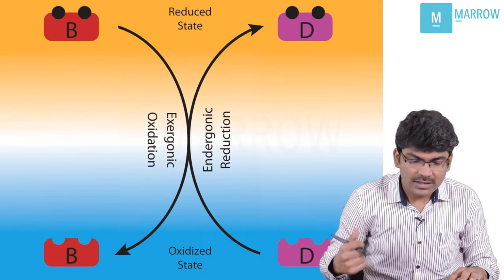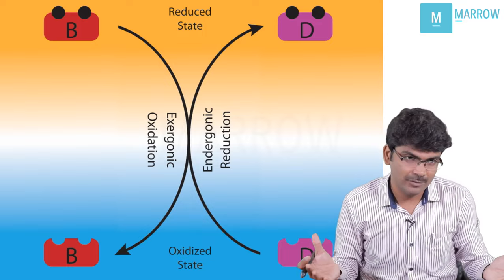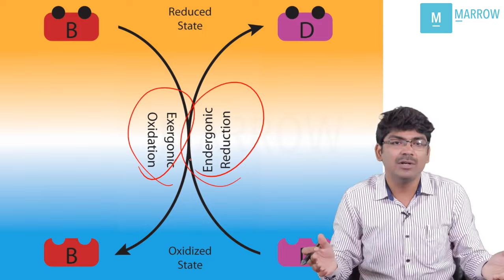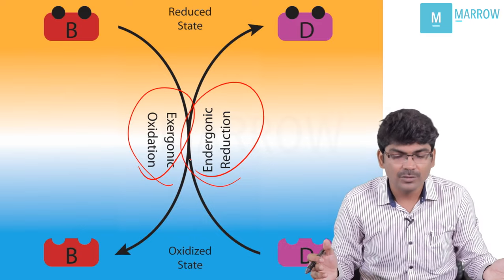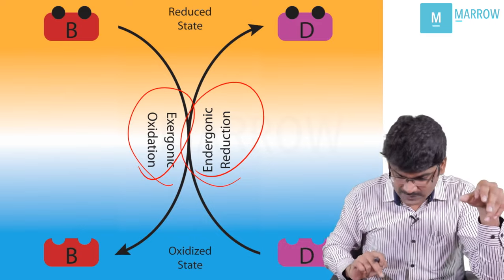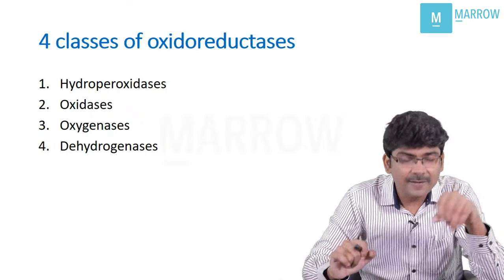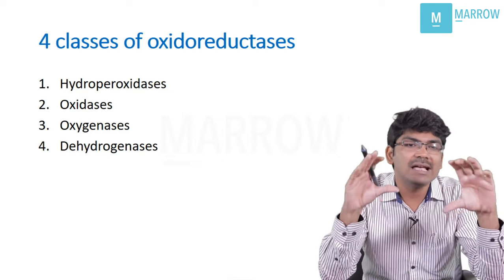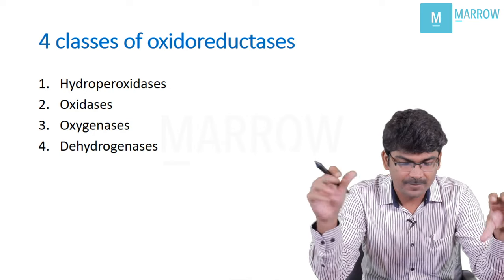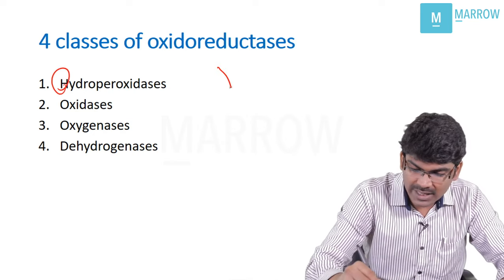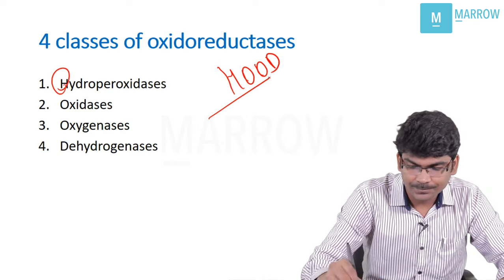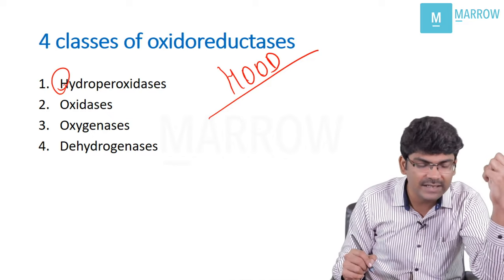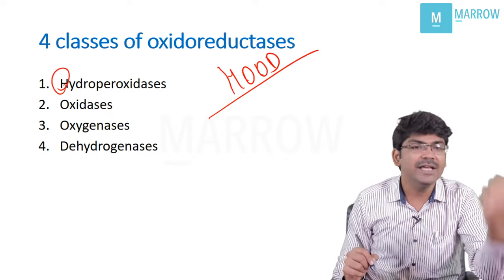Here you will see the coupling — exergonic reaction is coupled with endergonic reaction. Now let us see the four classes of oxidoreductases. The mnemonic is HOOD: H-O-O-D. Hydroperoxidases, oxidases, oxygenases, and dehydrogenases.